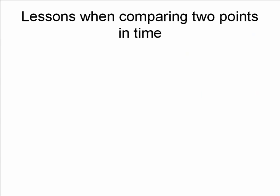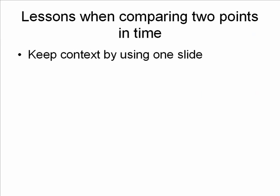Let's talk about the lessons we can learn when comparing two points in time. First, a mistake I see all the time: in order to keep context for the audience, you need to use one slide, not two. If you have two slides — here's where it was before, here's where it was after — inevitably people will ask to go back to the previous slide. What they're really saying is they've lost context. They don't know how to interpret the new information because they can't see the old information at the same time. So keep context for the audience by using only one slide and putting both points on it.